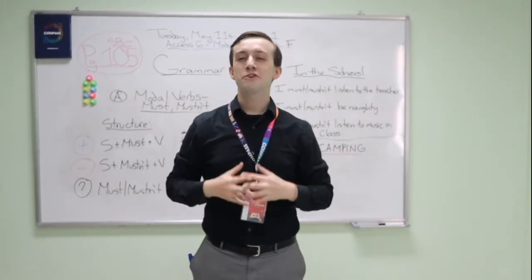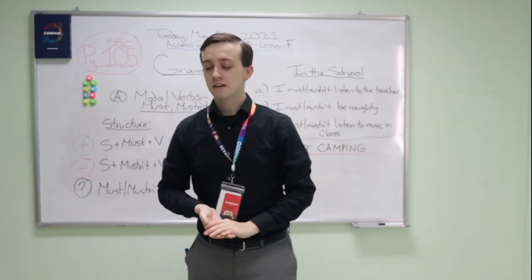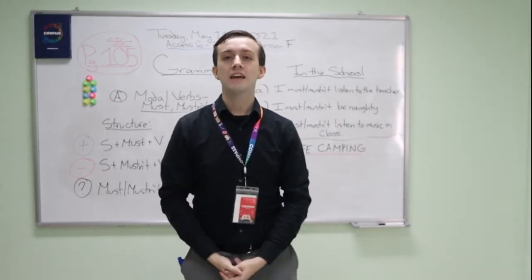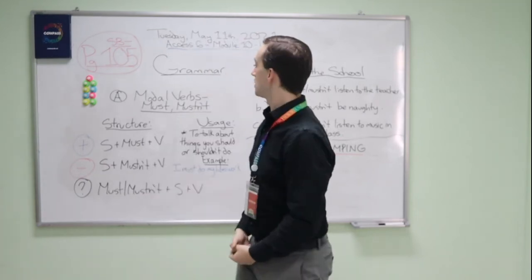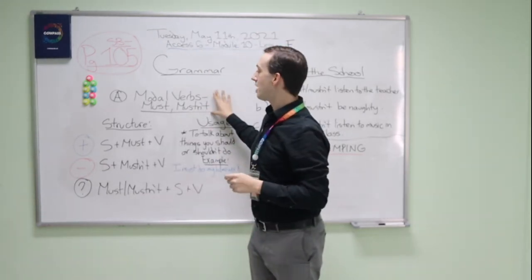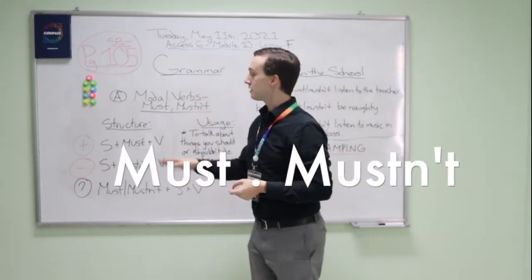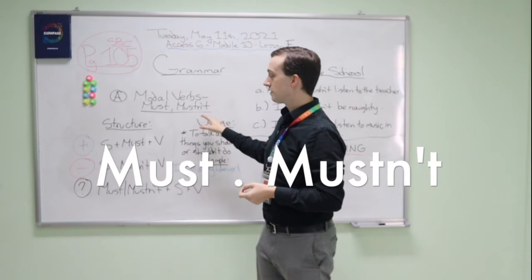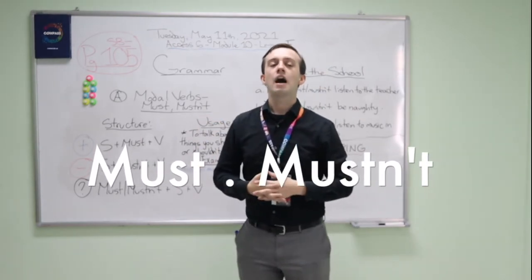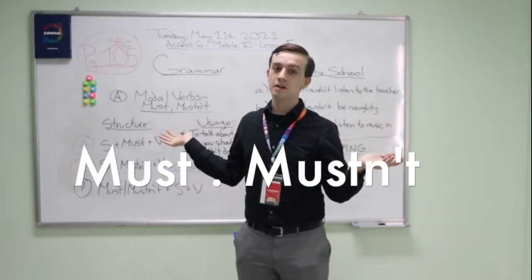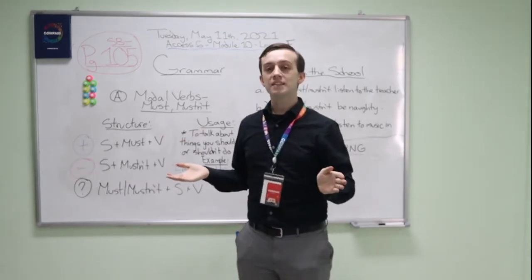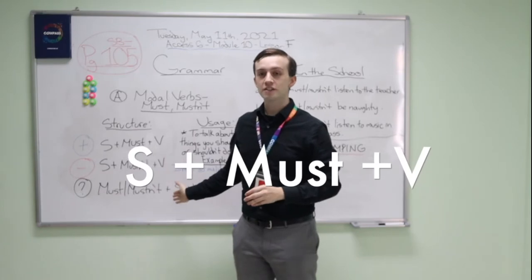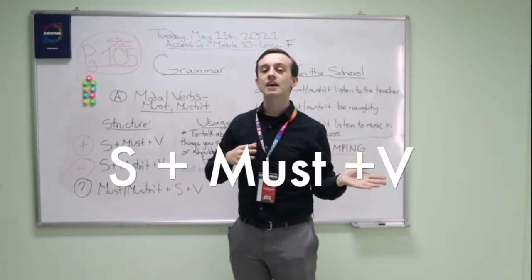Next we're going to study about grammar. Look at exercise 2 in your student book. We're going to study about the modal verbs must and mustn't. How can we use these words in a sentence? We use these structures with must and mustn't.